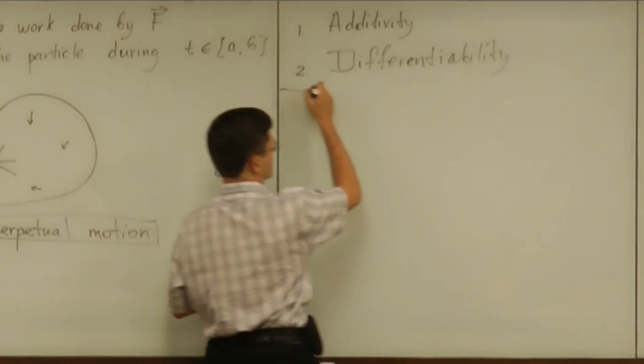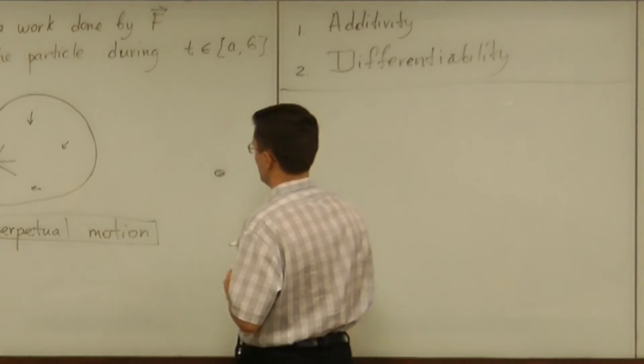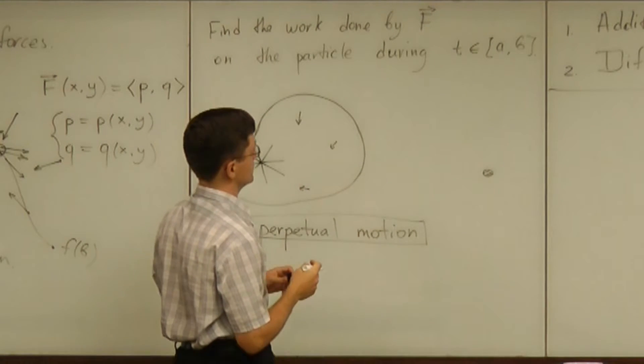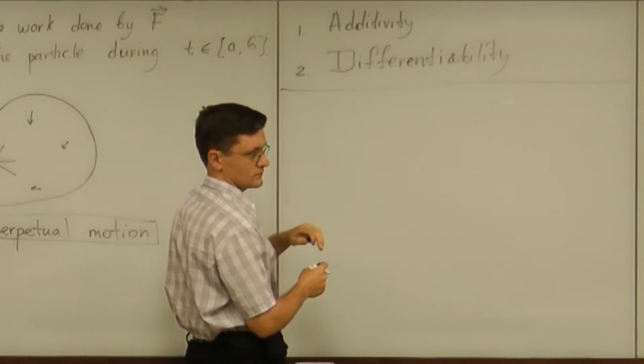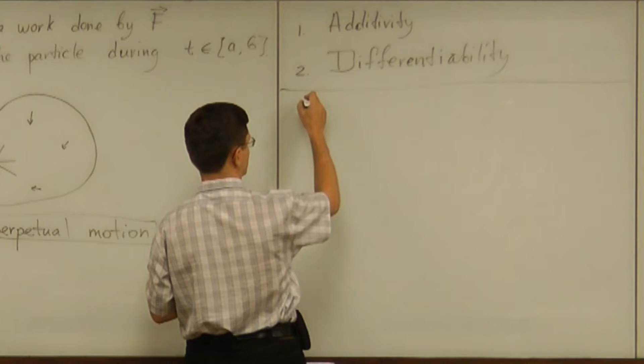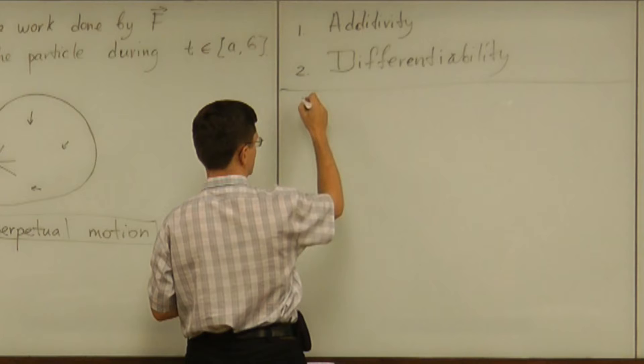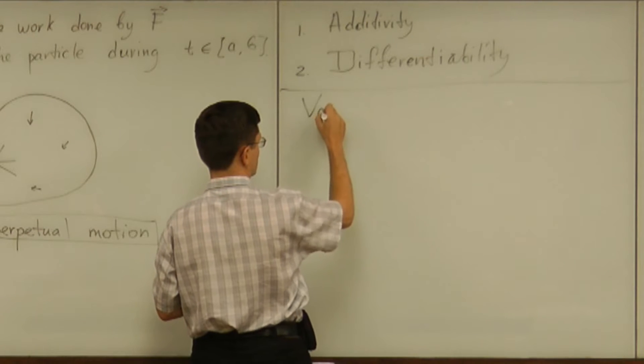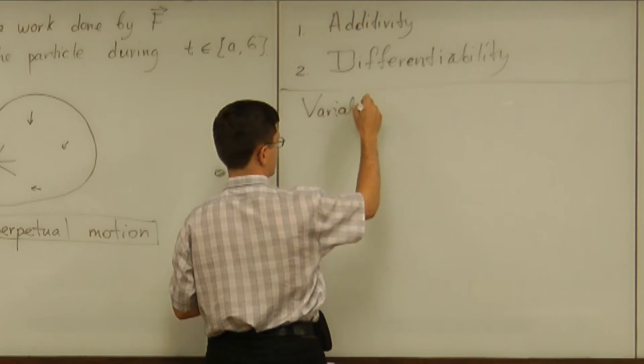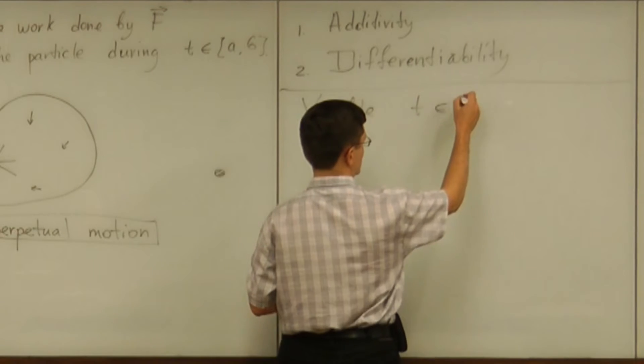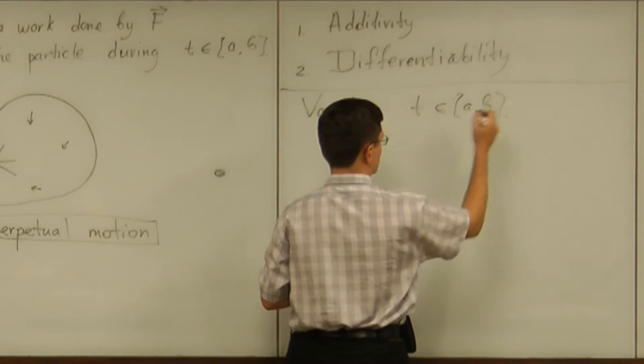So now we proceed to the setup. What do we do to set up the integral? Well, at this point we assume the parameter is going to be t. So the variable for integration is t and it changes within that given interval.